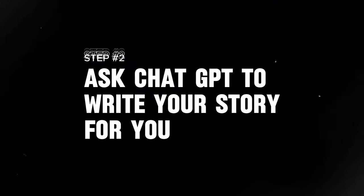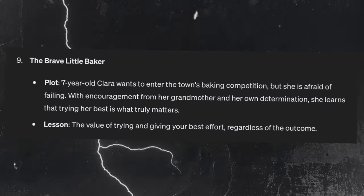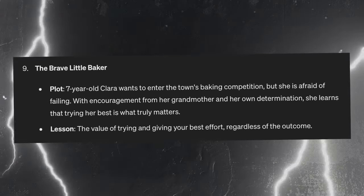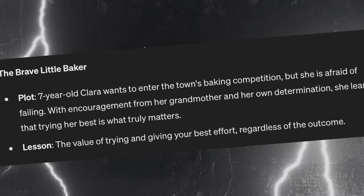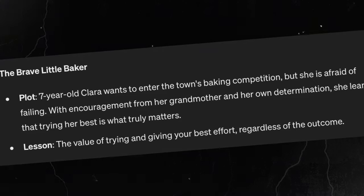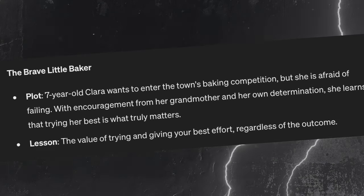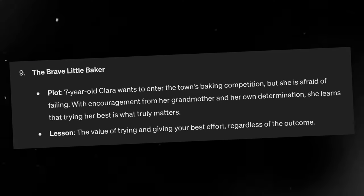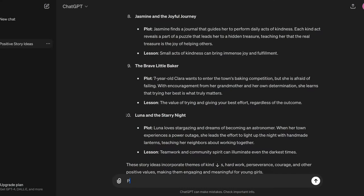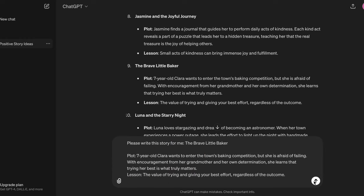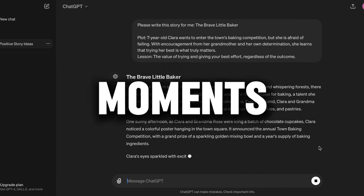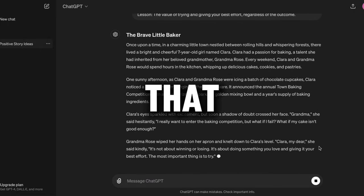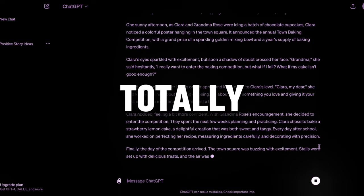Step 2: Ask ChatGPT to write your story for you. Let's say the one that caught your eye was number 9, 'The Brave Little Baker.' It has a synopsis about 7-year-old Clara who wants to enter the town's baking competition but is afraid of failing. With encouragement from her grandmother and her own determination, she learns that trying her best is what truly matters. Copy and paste that story synopsis into the chat, then prompt ChatGPT by saying 'Please write this story for me.' In just moments, ChatGPT wrote an entire story that is fun, inspiring, and totally makes sense.